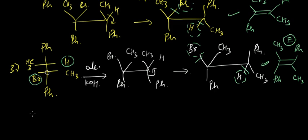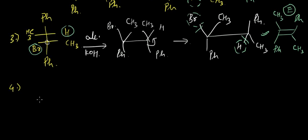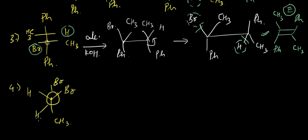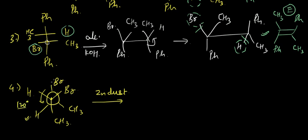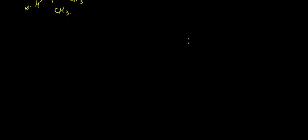Now let's look at another example which we'll try to do mentally, evaluating the answer without drawing the full sawhorse projection. We have Br, H, and CH3 and pass it over zinc dust. We rotate so the two Br atoms are anti to each other — rotating 120° anti-clockwise — and CH3 would end up here, giving us the final product.